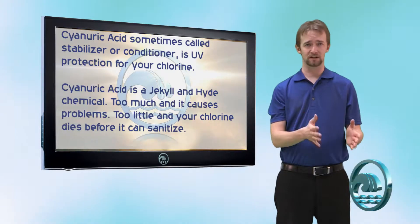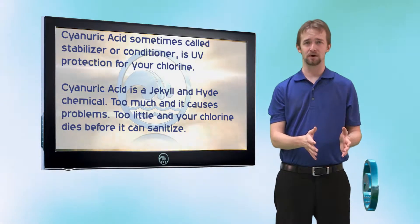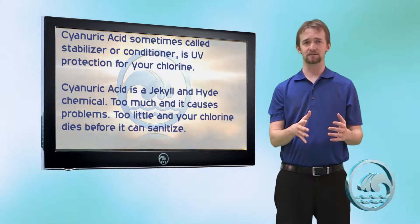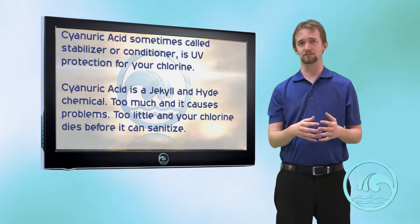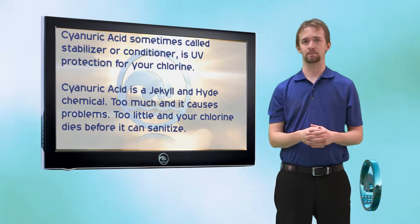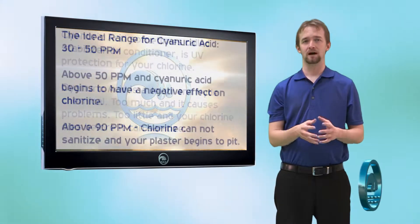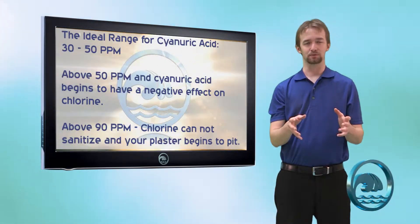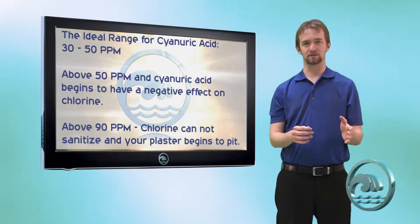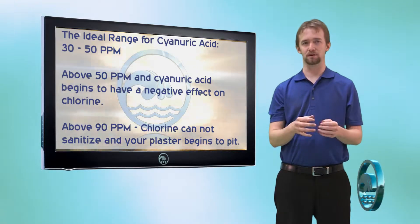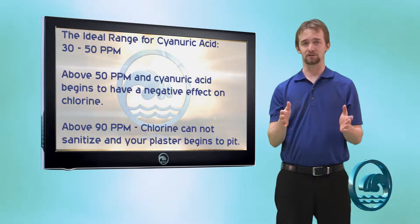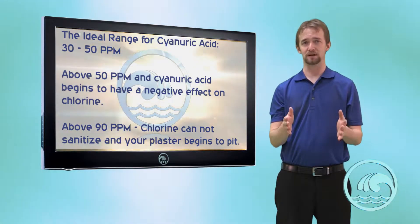If you don't have enough cyanuric acid in your water, the sunlight would break down your chlorine before it could do its job to sanitize your water. Ideally, you want to keep your cyanuric acid between 30 and 50 parts per million. This is where chlorine functions best.